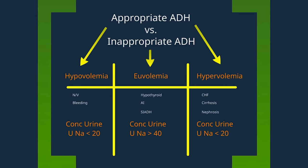Now the question is: is the ADH appropriate, as in hypovolemic or hypervolemic hyponatremia, where the body perceives low perfusion and stimulates renin, angiotensin, and aldosterone — which manifests as a low urine sodium in the setting of concentrated urine? This is contrasted with euvolemic hyponatremia, where the patient is volume expanded and not intravascularly depleted, and would have autonomous ADH secretion, presenting with concentrated urine and elevated urine sodium.